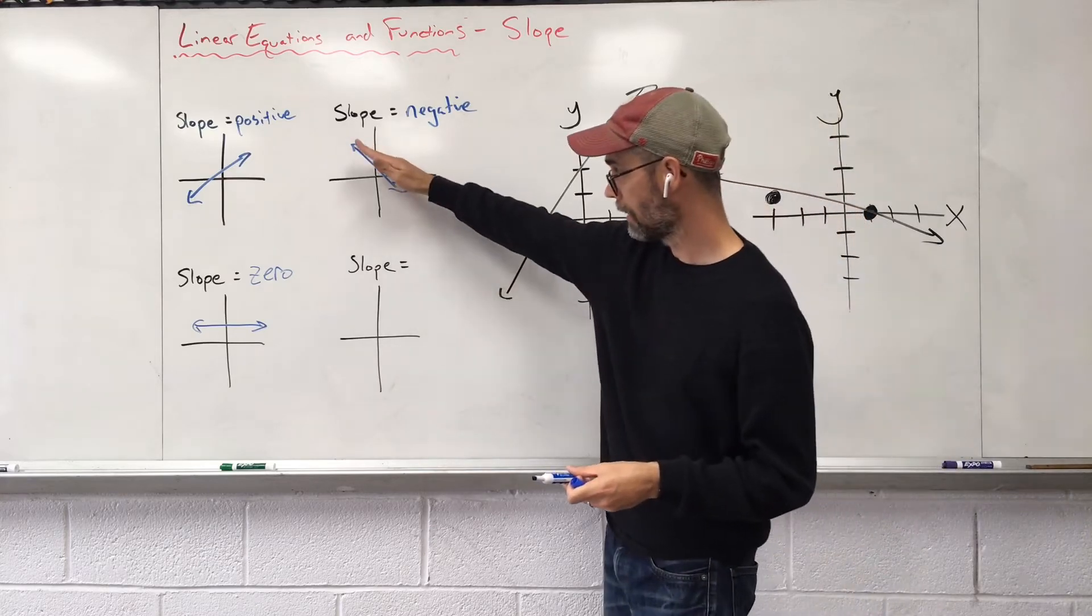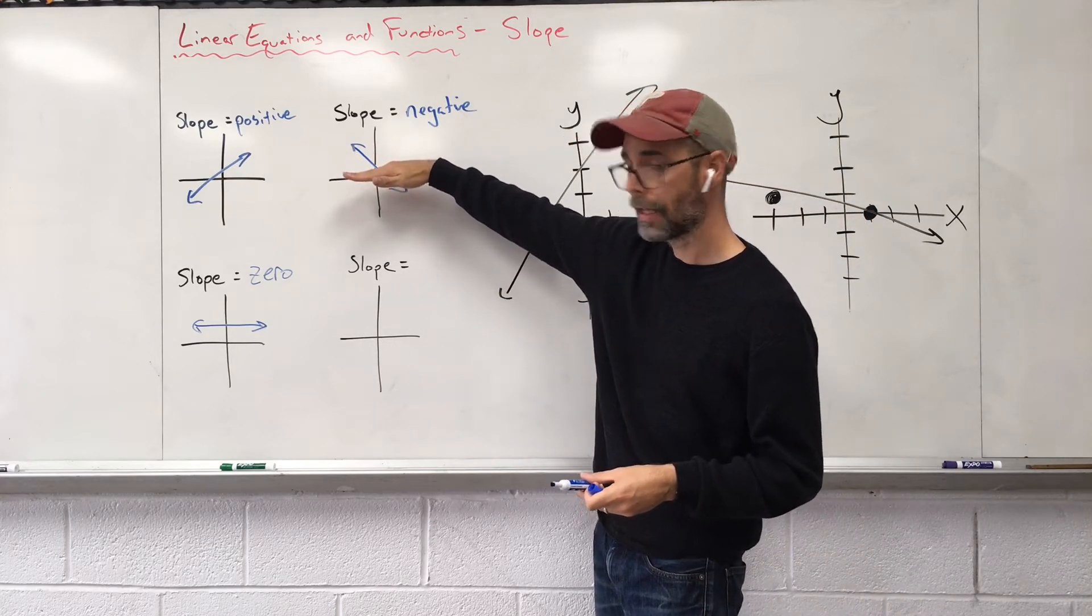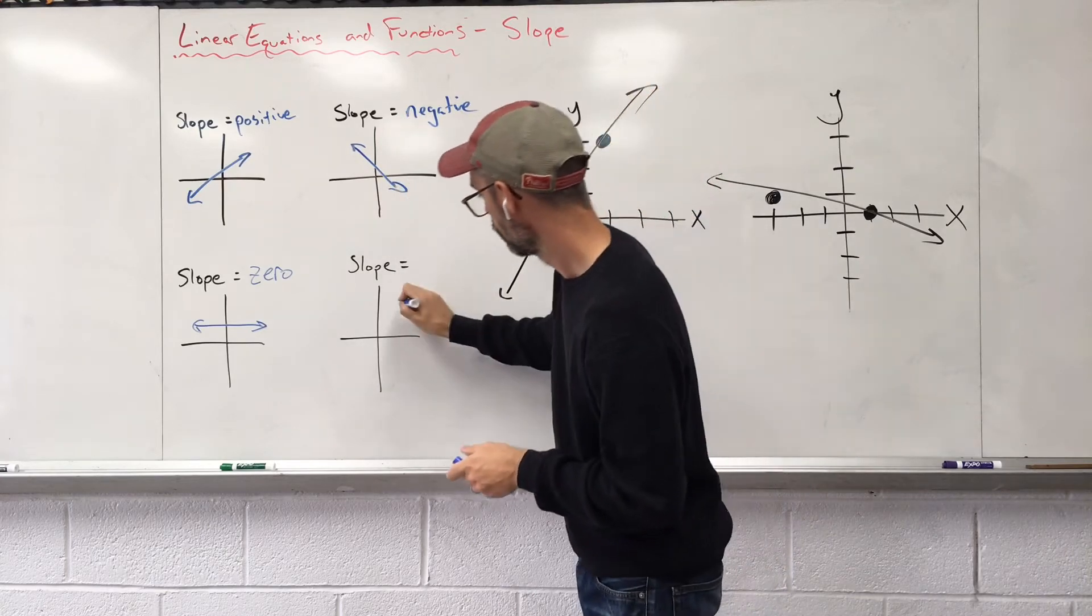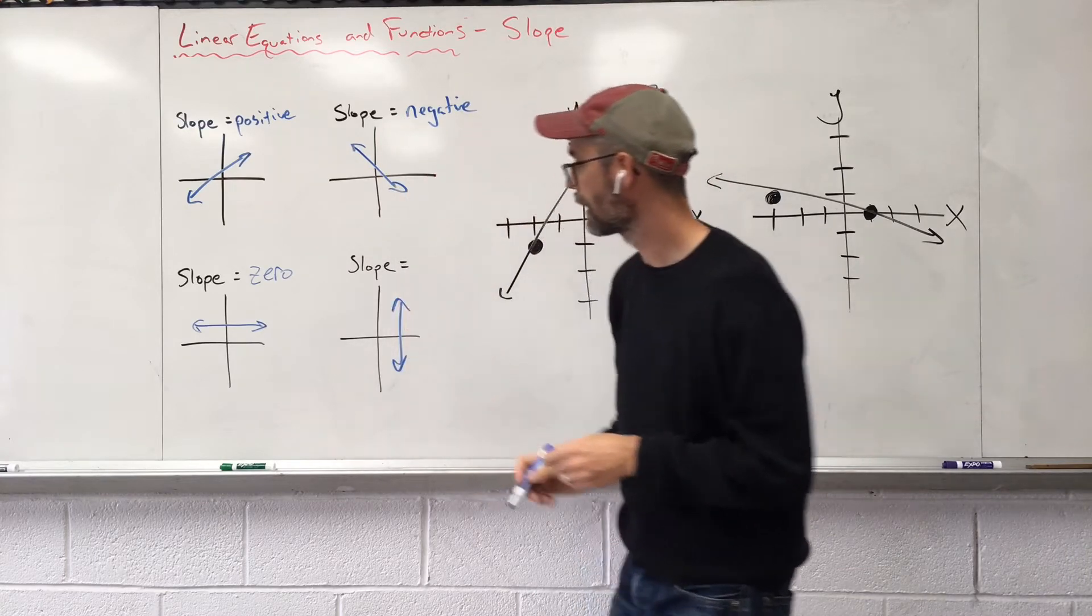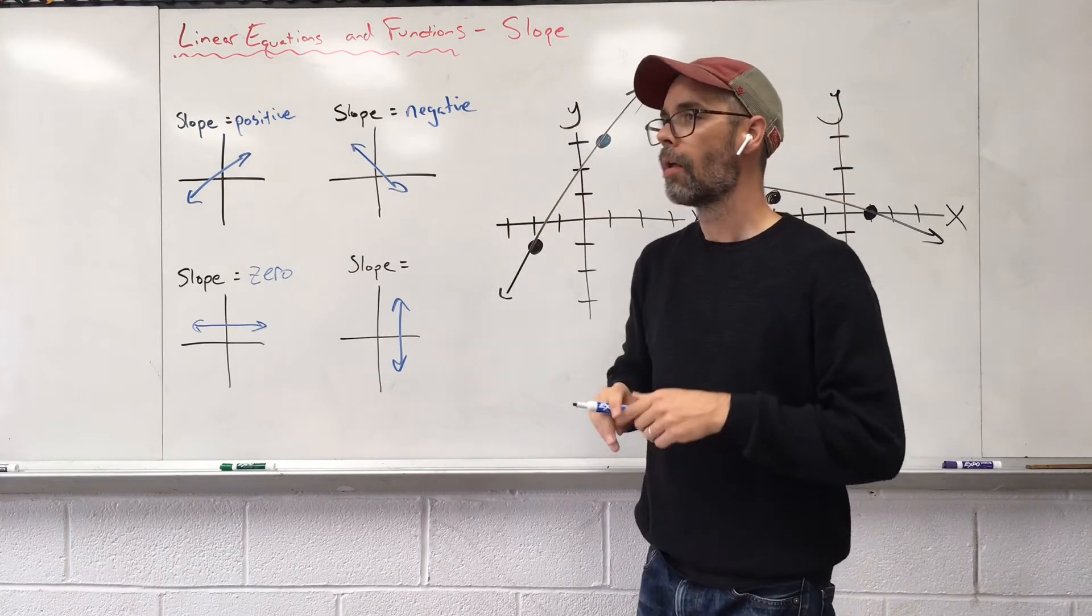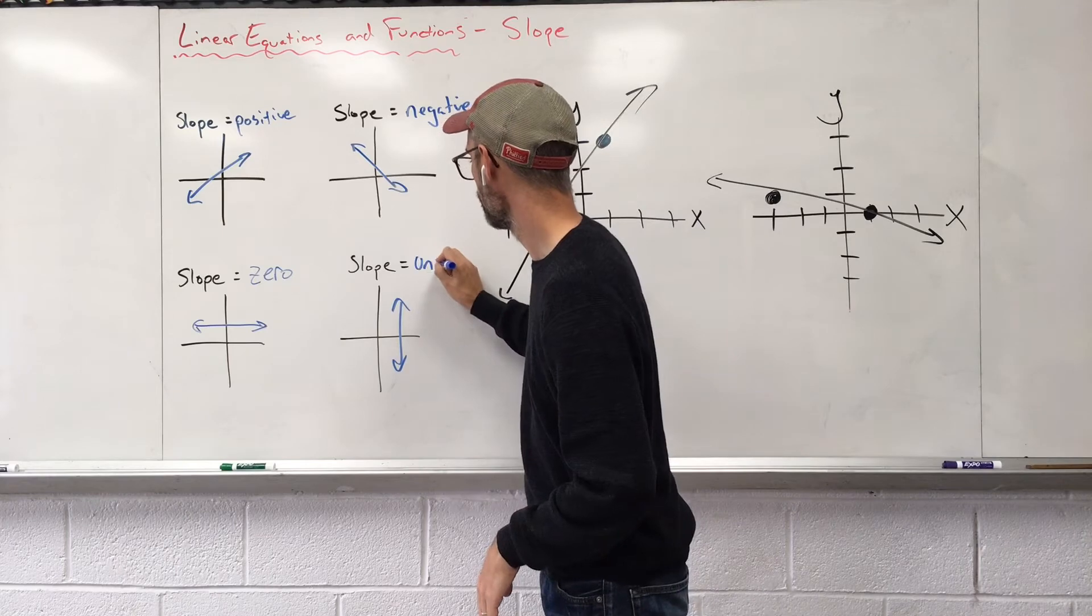What if this line, instead of flattening side to side, it flattens up and down? What if we have a line that goes like that? When we've got positive, negative, zero, our only other option is something called undefined.